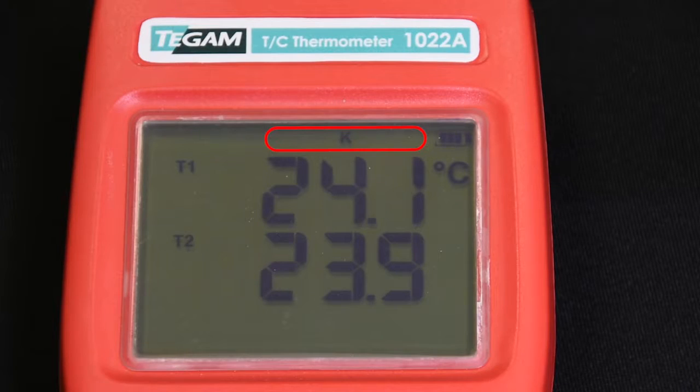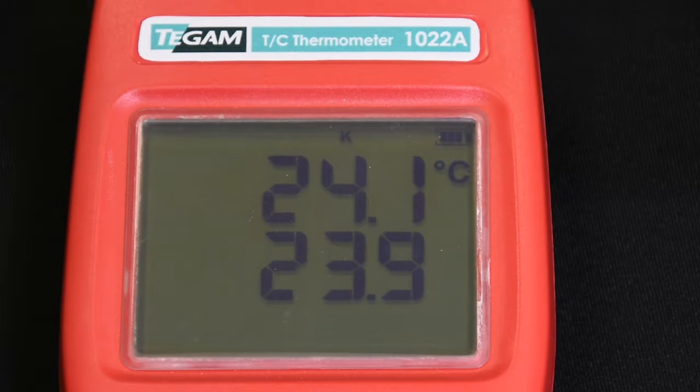You'll see on the LCD, the thermocouple type will flash. That indicates that the thermocouple type is the active parameter.